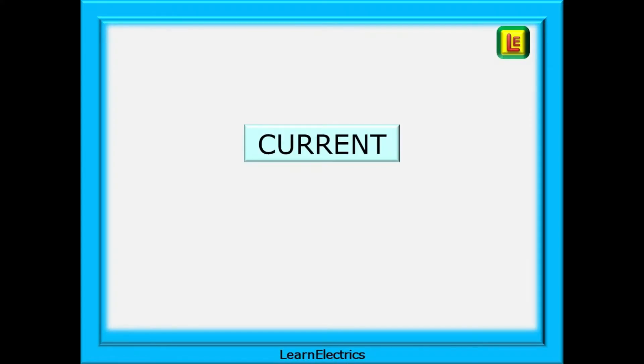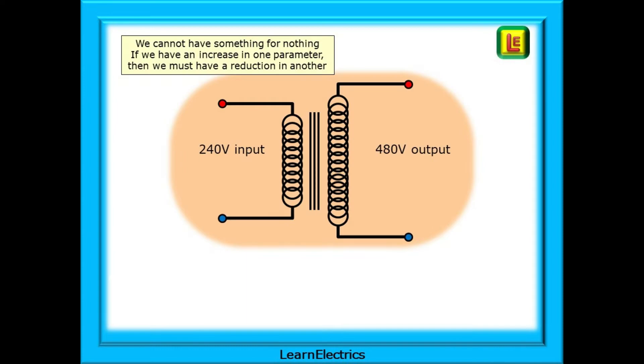How does all this affect the current on each side of the transformer? We cannot have something for nothing. If we have an increase in one parameter then we must have a reduction in another. If we have an increasing transformer with a 240 volt input and a 480 volt output what effect does this have on the available current?